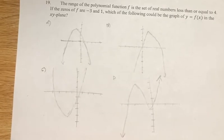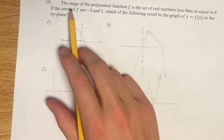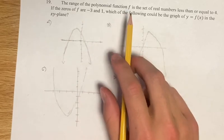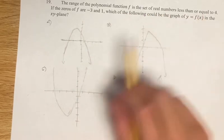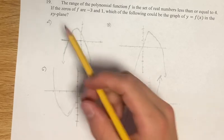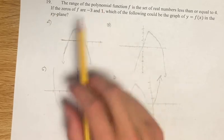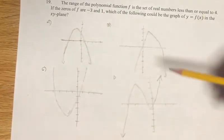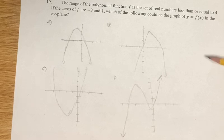Hello, and welcome back to another video. It's a problem. We're told that the range of the polynomial function f is the set of real numbers less than or equal to 4. We're also told that the zeros of f are negative 3 and 1. And we're asked, of our options here, which of the following could be the graph of y equals f of x, given what we've already been told about it.